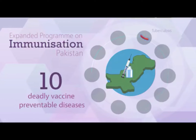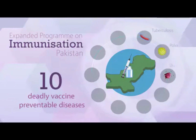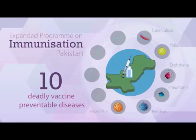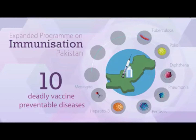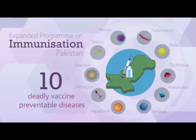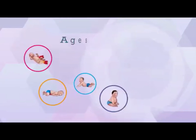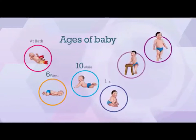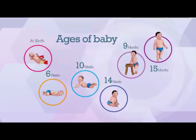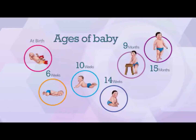These diseases are tuberculosis, polio, diphtheria, pneumonia, whooping cough, hepatitis B, meningitis, diarrhea, tetanus, and measles. These free vaccines are administered to children from birth till the age of 15 months in six visits.